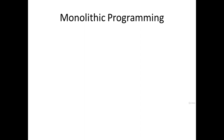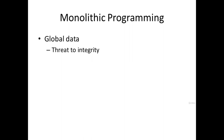The first programming paradigm we are going to see is monolithic programming. Monolithic programming supports two main features. The first feature is global data, meaning data is shared throughout the program. You can modify the data intentionally or unintentionally throughout the program. There is no privacy of data, which may also lead to a threat to its integrity.